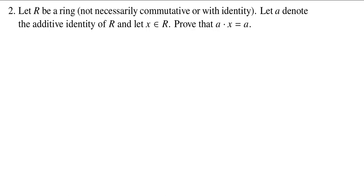In this problem we are looking at a ring and it's as generic as could be. We don't know if it's commutative, we don't know if it has an identity, meaning a multiplicative identity. But of course as a ring it does have an additive identity, and for some bizarre reason we're calling it A in this problem.